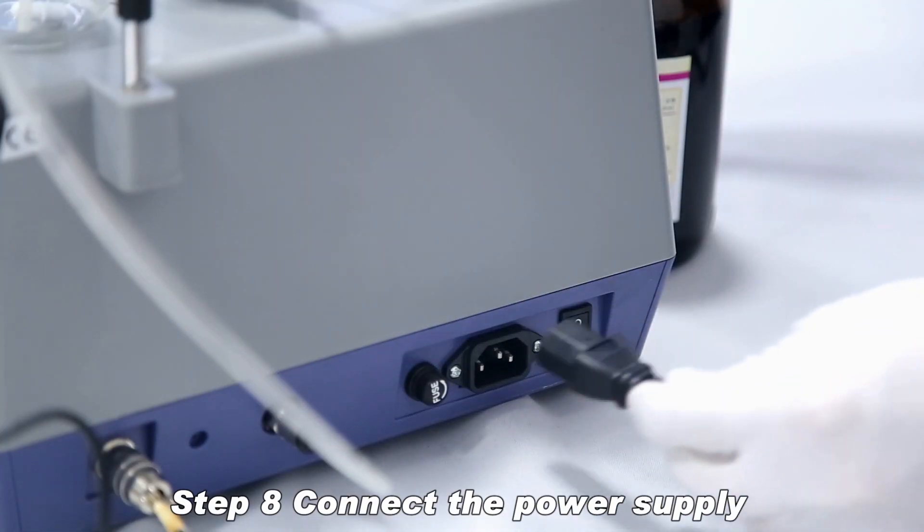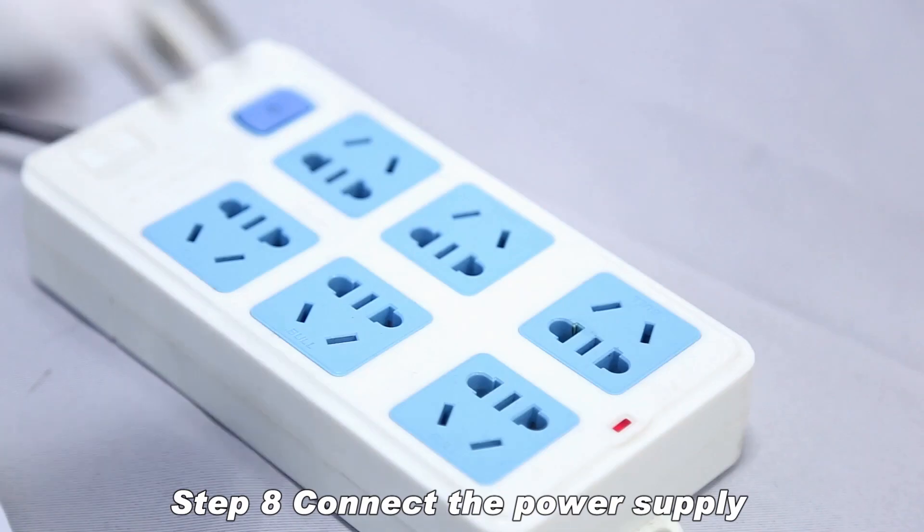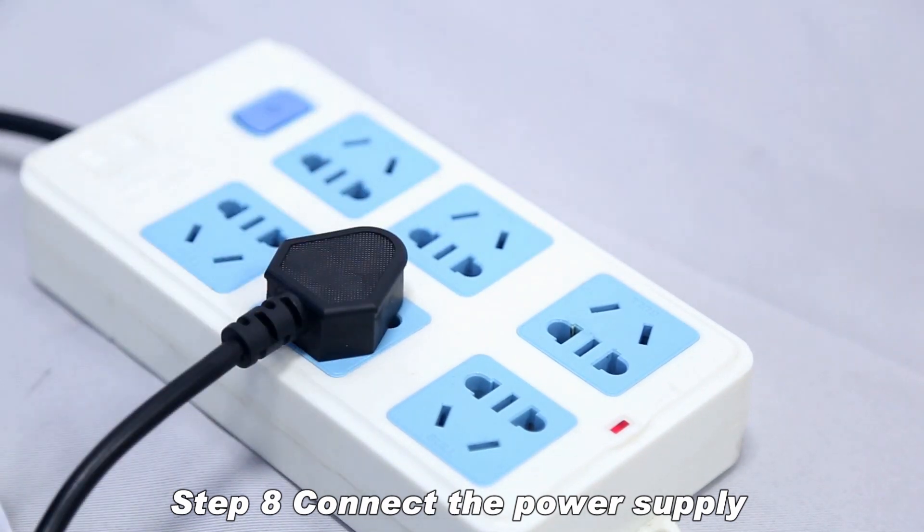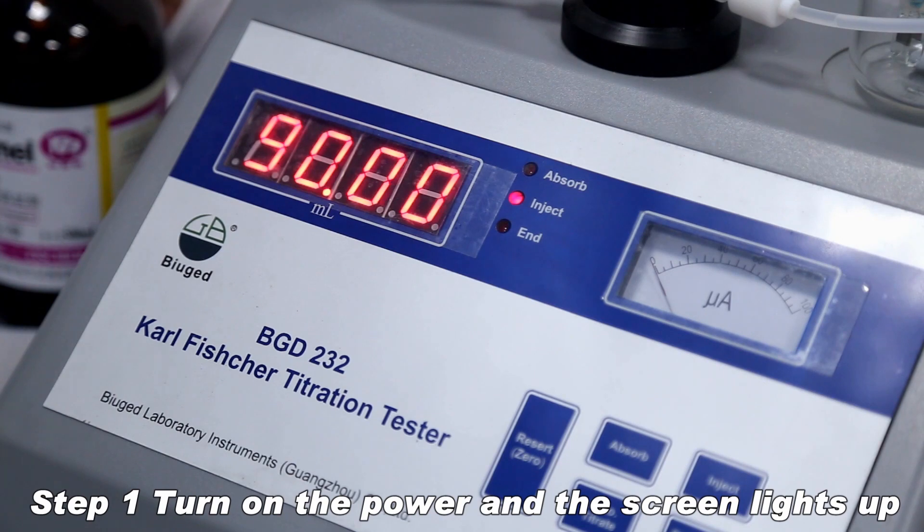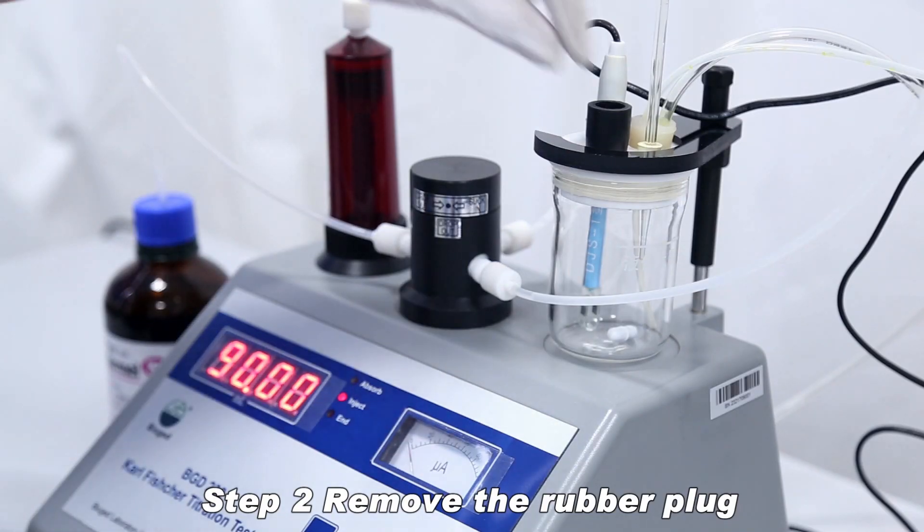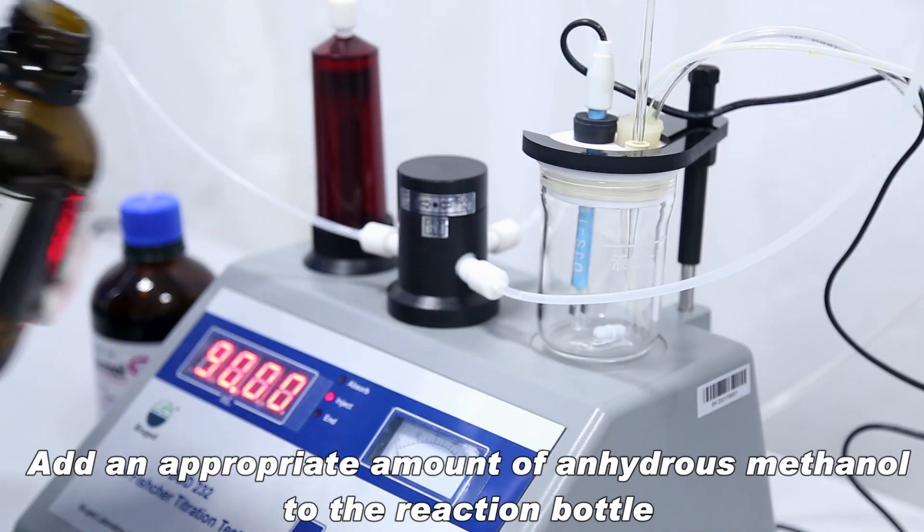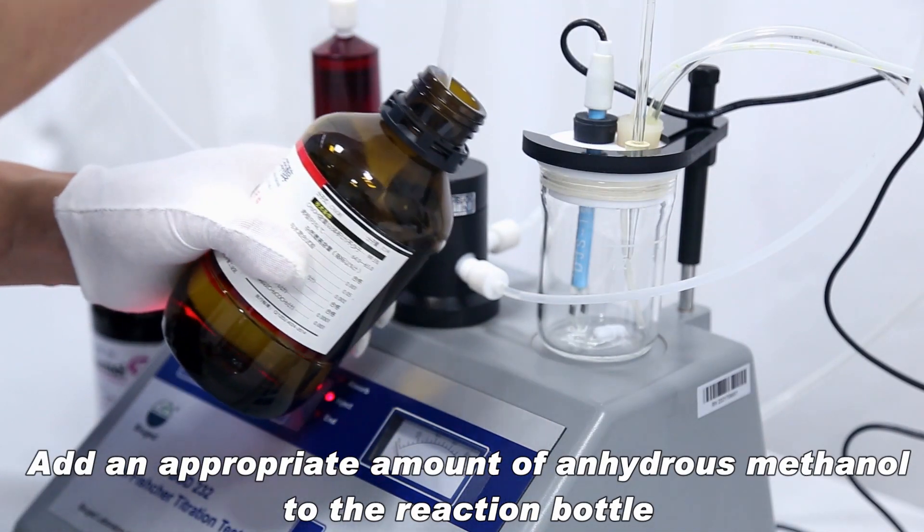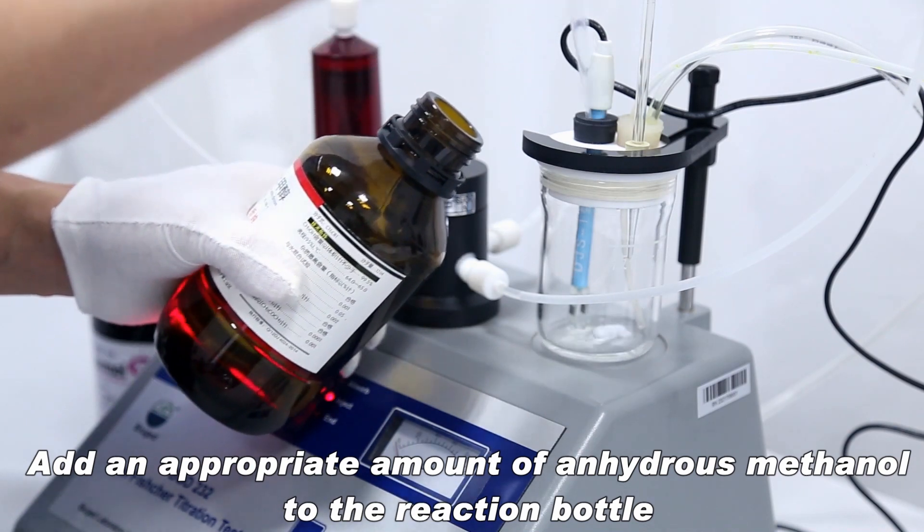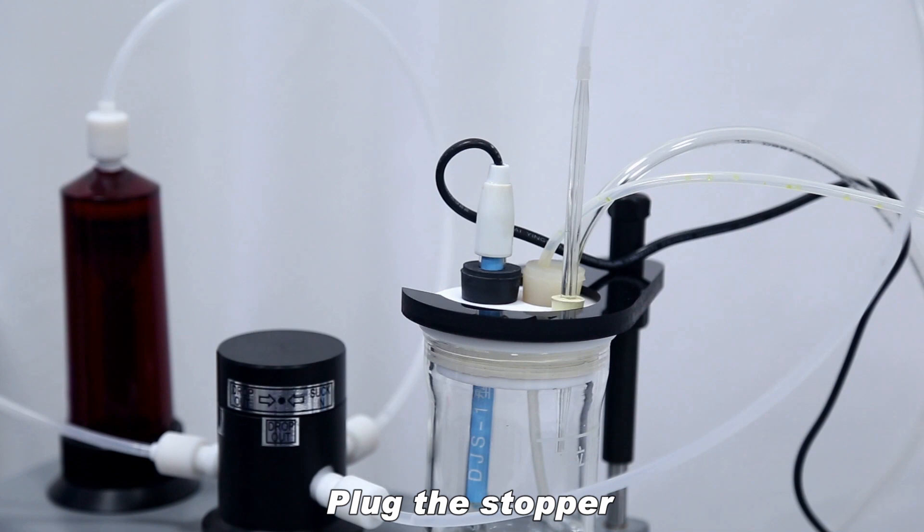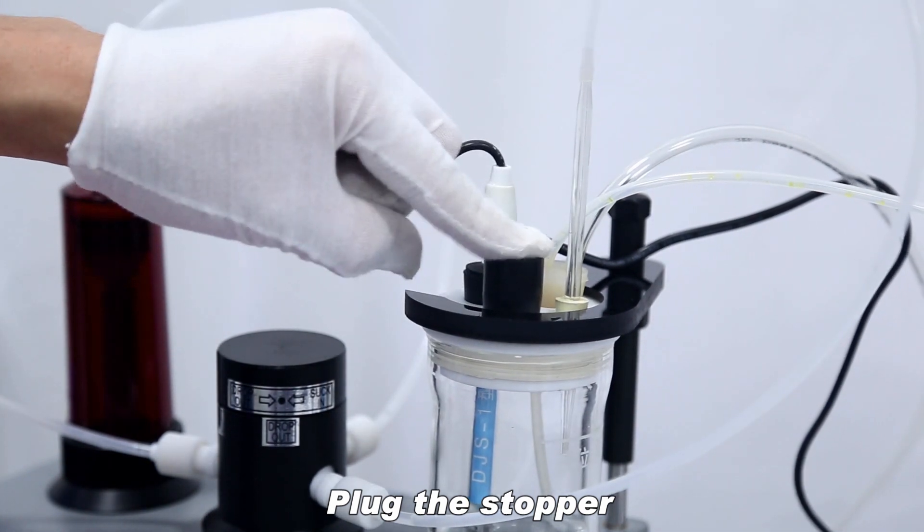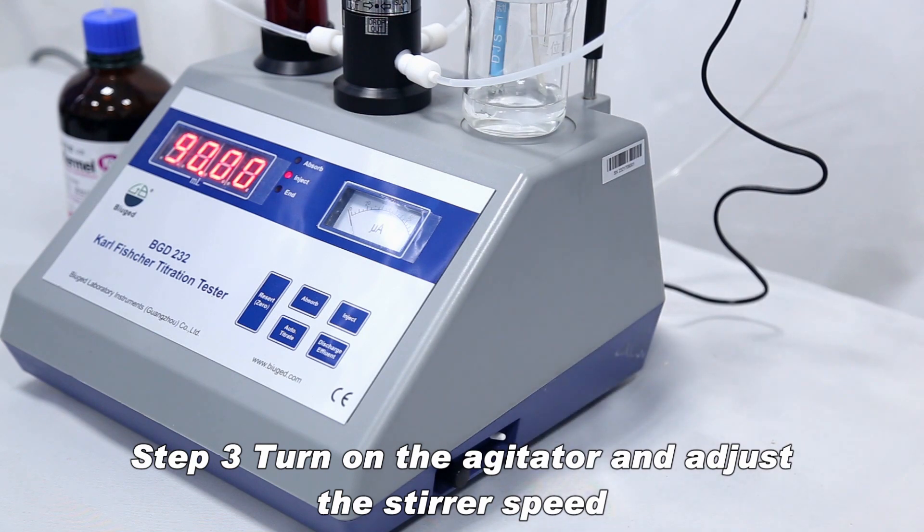Connect the power supply. Turn on the power and the screen lights up. Remove the rubber plug. Add an appropriate amount of anhydrous methanol to the reaction bottle until the electrode metal piece is immersed. Plug the stopper. Turn on the agitator and adjust the stirrer speed.